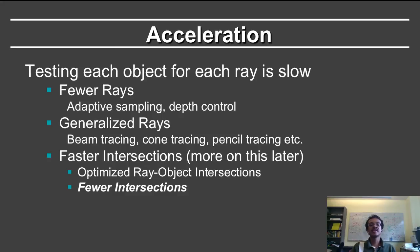One can therefore consider using fewer rays by adaptively sampling which pixels to shoot a ray for, by having adaptive depth controls. One can also consider generalized rays where you shoot multiple rays at a time, things like beam tracing, cone tracing, pencil tracing, and so on.